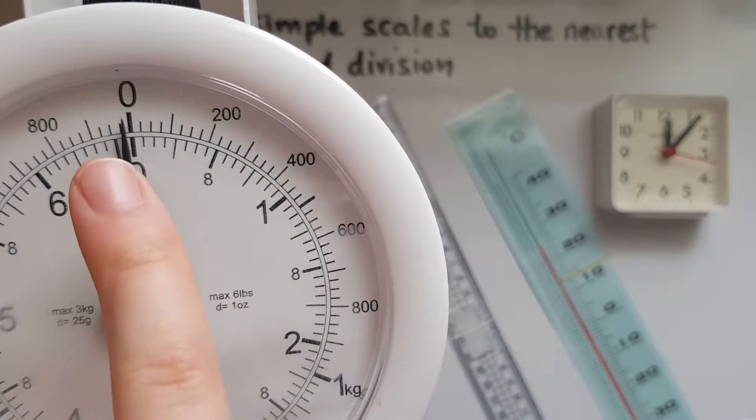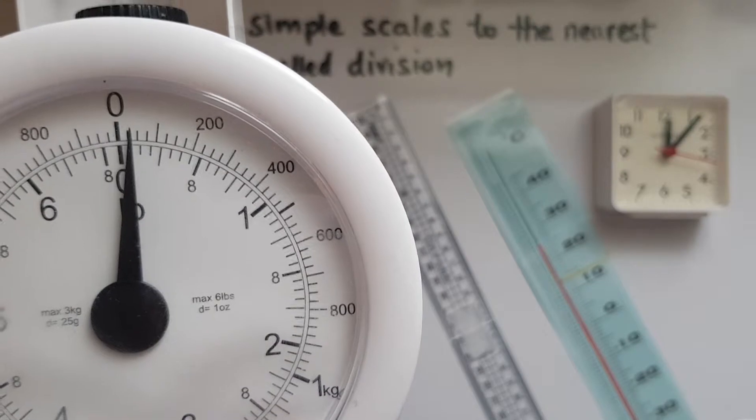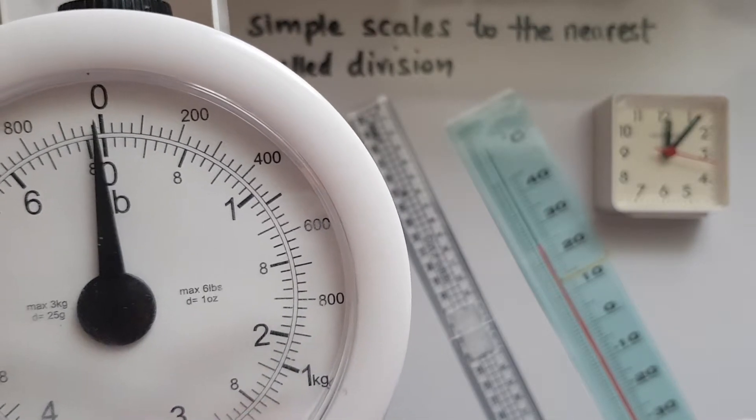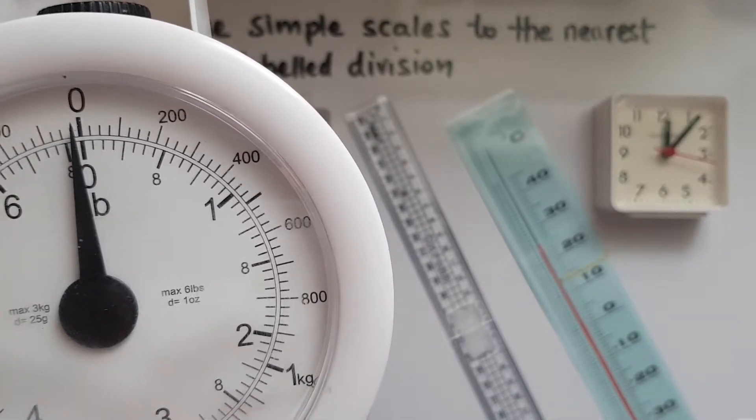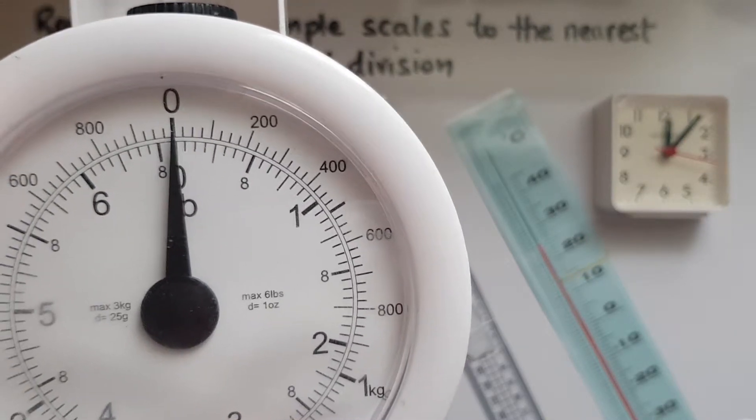Whereas these smaller divisions in between these numbers, they're not labeled. So we're not being told exactly how many grams or ounces these are. We've got to work it out ourselves.